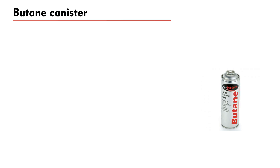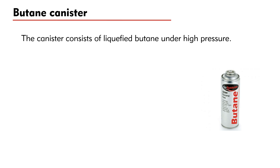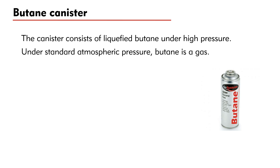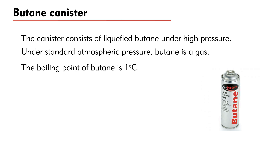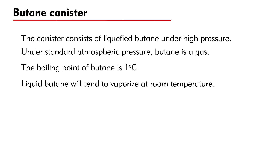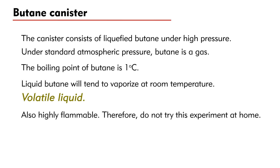Besides using a fire extinguisher, we can demonstrate this by using a butane canister. Similar to a fire extinguisher, the canister consists of liquefied butane gas under high pressure. Under standard atmospheric pressure, butane is a gas. The boiling point of butane is 1 degree Celsius only; therefore, liquid butane will boil at room temperature — it tends to vaporize, making it a volatile liquid. However, besides being volatile, butane is highly flammable. Therefore, do not try this experiment at home without adult supervision.